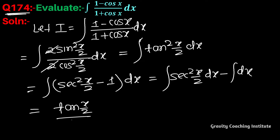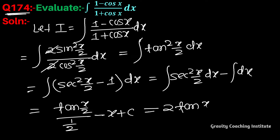For the integration of sec squared (x/2), the coefficient of x is 1/2, so we multiply by 2. The result is 2 tan(x/2) minus x plus C.